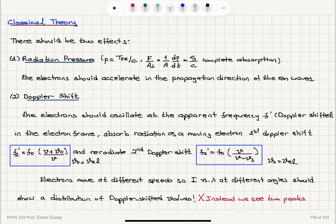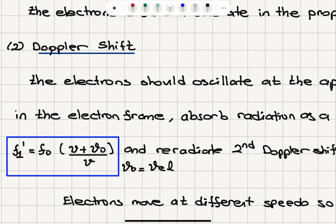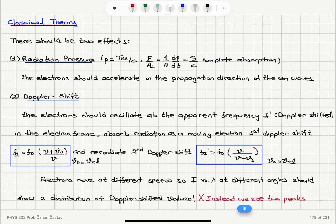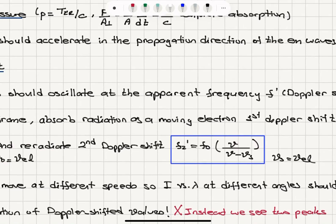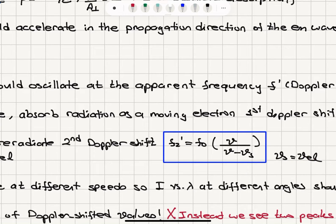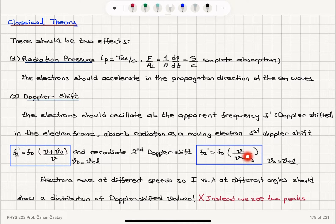The electrons oscillate at the apparent Doppler-shifted frequency f prime in the electron frame. If the electron is moving with speed v0 toward the x-ray source, it sees an increased frequency f1 prime equals f0 times (v plus v0) over v. These moving electrons then re-radiate, acting as the source of radiation, producing another Doppler shift as the electron approaches the detector: f0 times v over (v minus vS). Since electrons move at a distribution of different speeds, we would expect to see a distribution of Doppler-shifted values in the intensity versus wavelength spectrum.